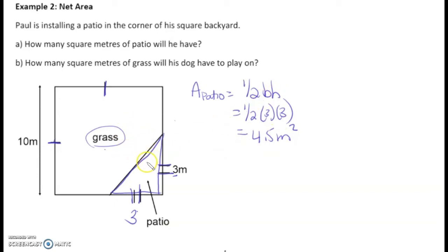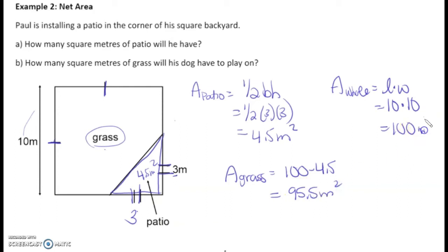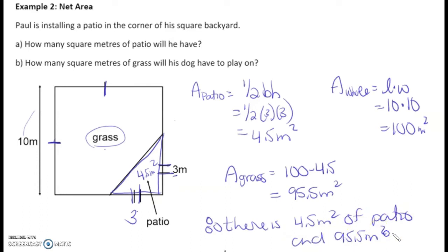For part B, we subtract: take the area of the entire backyard minus 4.5 meters squared. The backyard is a square, so area = 10 × 10 = 100 meters squared. The area of the grass = 100 − 4.5 = 95.5 meters squared. Therefore, there is 4.5 meters squared of patio and 95.5 meters squared of grass.